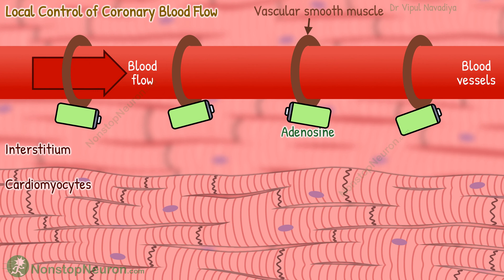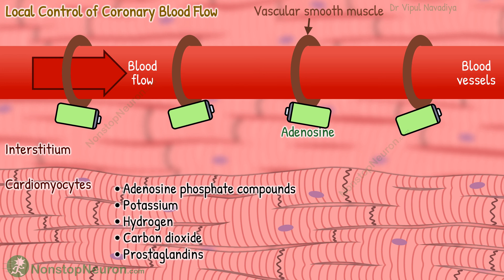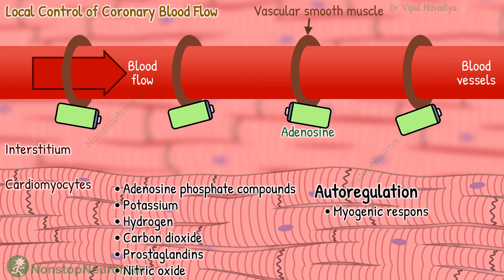Apart from adenosine, other metabolic factors like adenosine phosphate compounds, potassium, hydrogen, carbon dioxide, prostaglandins, nitric oxide, etc., also play a role in local control of coronary blood flow. Also, autoregulation of coronary blood flow keeps it stable between perfusion pressures of about 70 to 150 mmHg. The autoregulation happens by myogenic response and metabolic regulation, similar to autoregulation in other organs like brain and kidney.